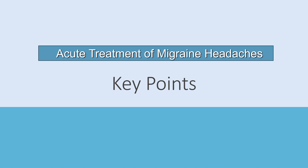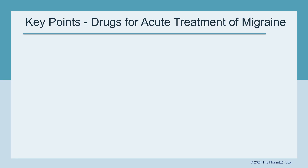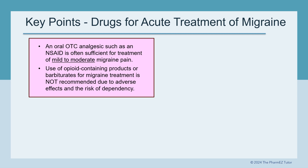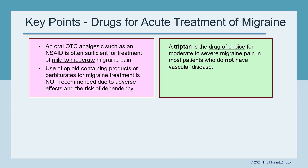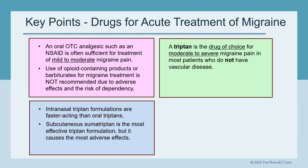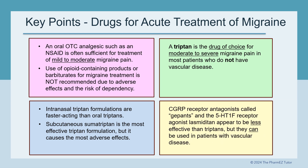Let's go over the key points for the acute treatment of migraine headaches. An oral OTC analgesic such as an NSAID is often sufficient for mild to moderate migraine pain. Use of opioid-containing products or barbiturates is not recommended due to adverse effects and the risk of dependency. A triptan is the drug of choice for moderate to severe migraine pain in most patients without vascular disease. Intranasal triptan formulations are faster acting than oral triptans, and subcutaneous sumatriptan is the most effective triptan formulation but causes the most adverse effects. CGRP receptor antagonists (G-PANs) and the 5-HT1F receptor agonist Lasmiditan appear to be less effective than triptans but can be used in patients with vascular disease.